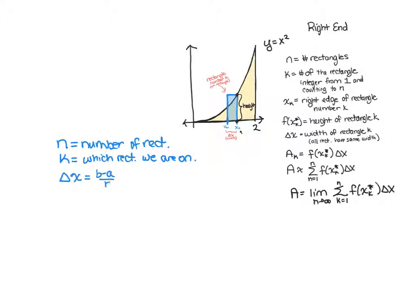So delta x is b minus a over n. So what do we mean by that? Our interval that we're looking at is from 0 to 2, and so our left edge is a and our right edge is b. So b minus a is just giving us the length of that interval. So here it's 2 divided by the number of pieces we want to split the interval into.